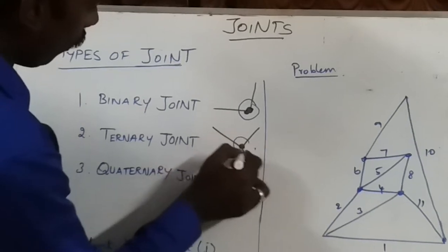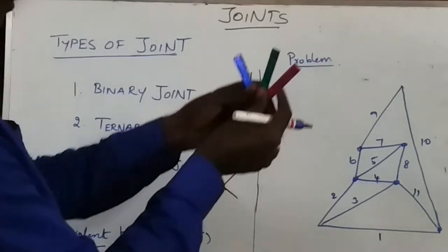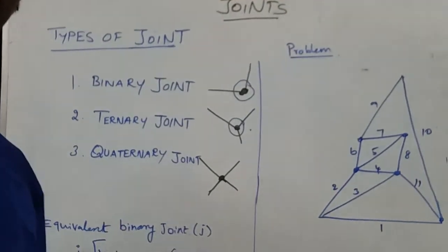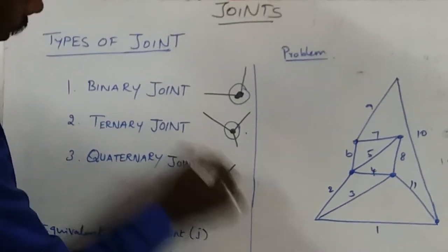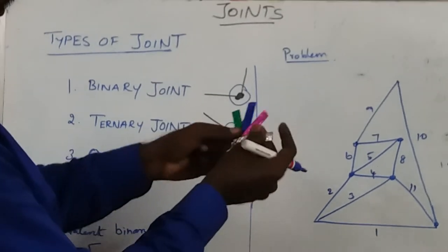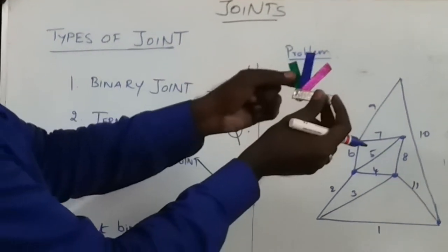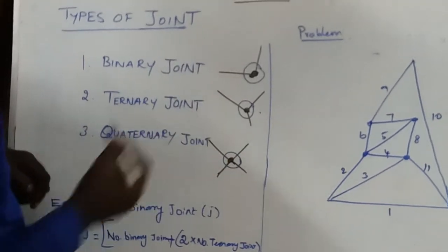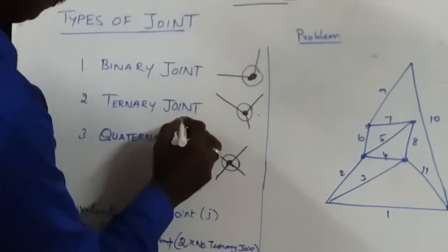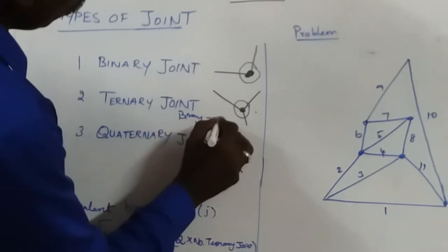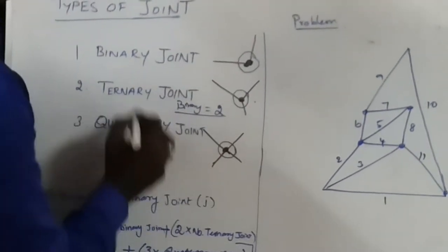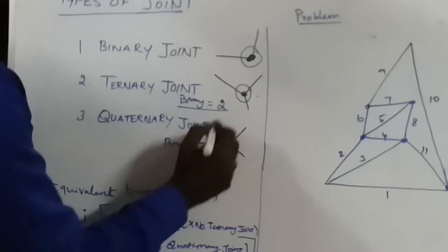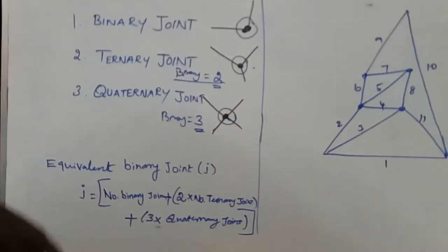A ternary joint means three different links in a connection. Here is the sample for a ternary joint - three different links in a connection. Next, a quaternary joint means four different links in a connection. Here is the quaternary joint - one, two, three, four - four links in a connection. One ternary joint is equivalent to two binary joints.